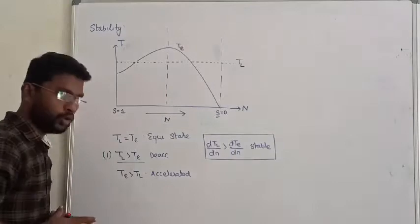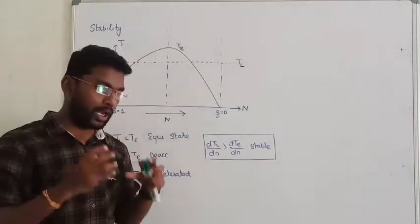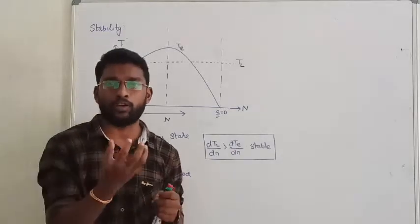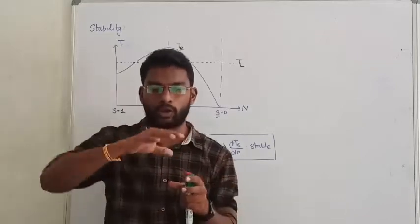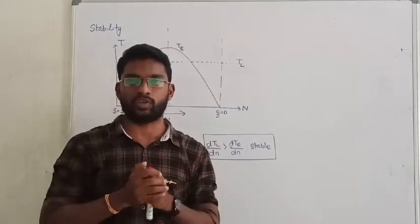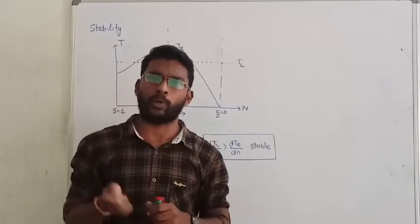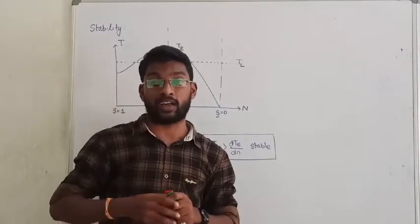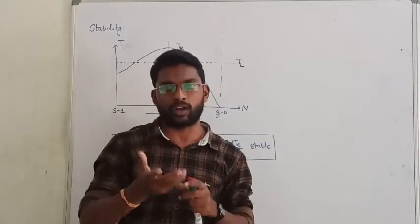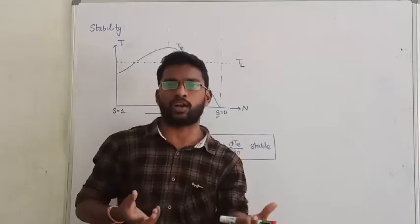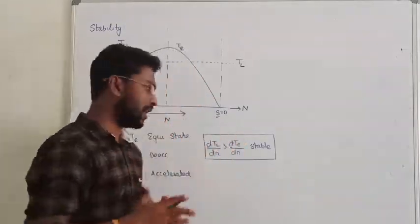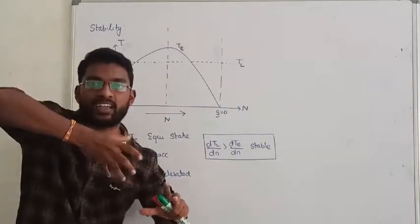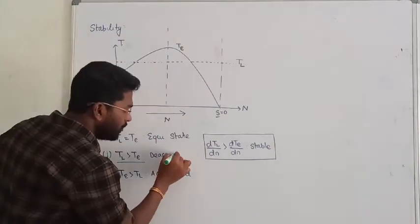Now, if we apply load, the load torque developed is more than the electromagnetic torque. If the load torque is greater than the electromagnetic torque, then the machine starts decelerating. Or we can say, the speed of the machine is getting reduced. That is one case.